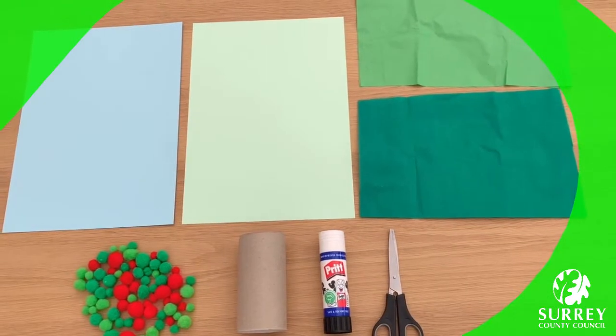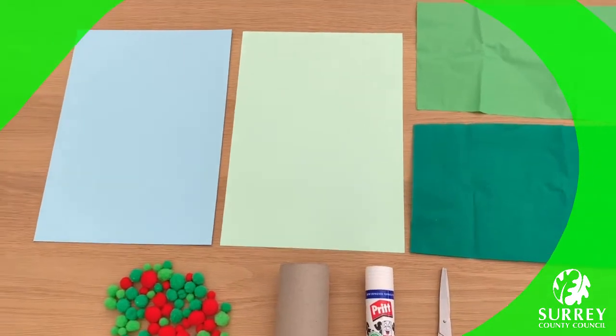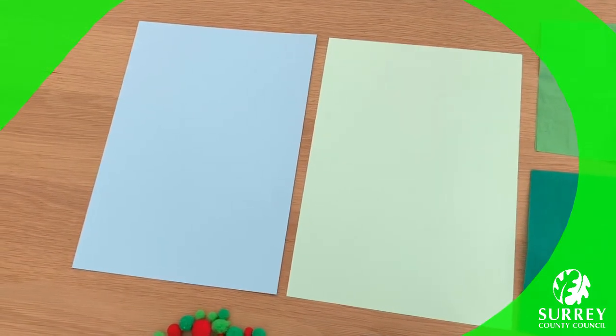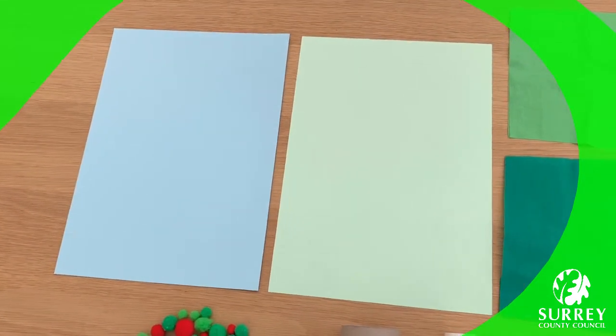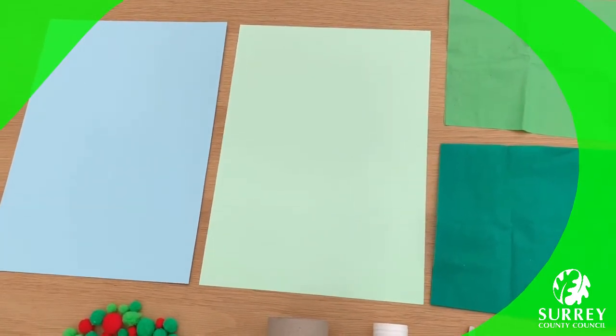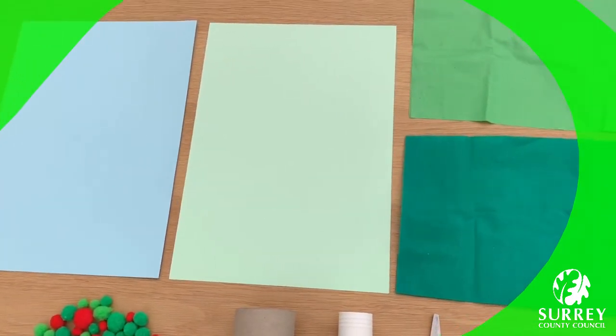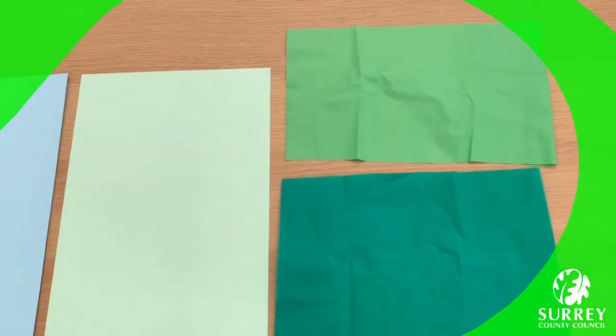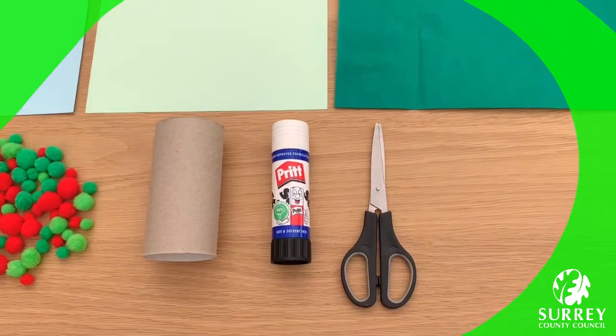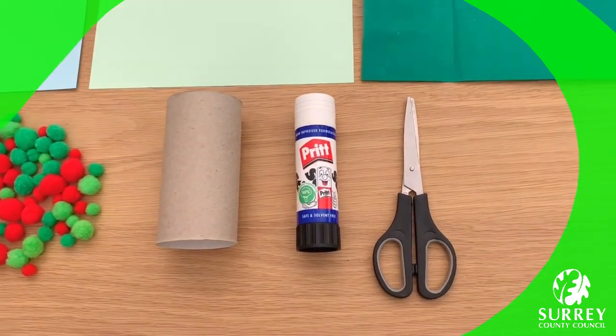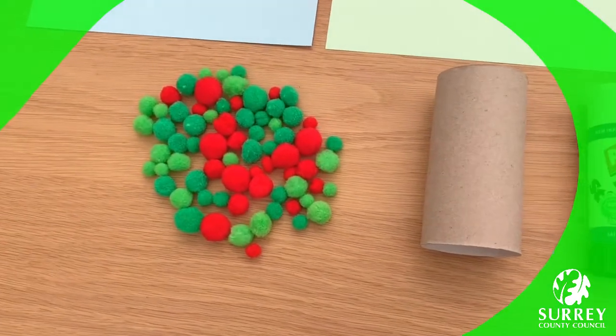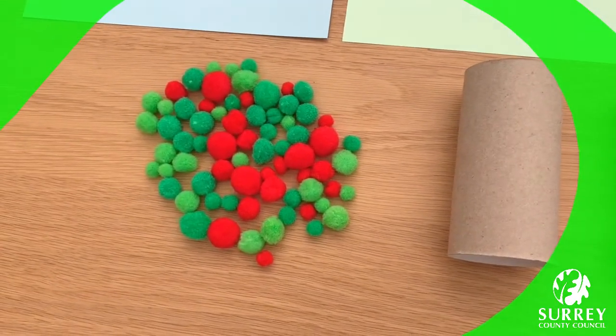Here's what you need. One piece of A4 blue paper or card for the background of the apple tree. I've got blue card. You'll need one piece of green A4 paper or card for the grass. I've got green card, some green tissue paper, a pair of scissors, a glue stick or some PVA glue, an empty toilet paper roll, and some red or green pom-poms to use as the apples.